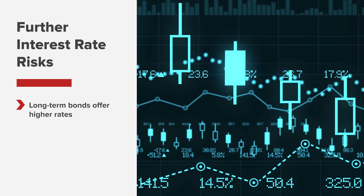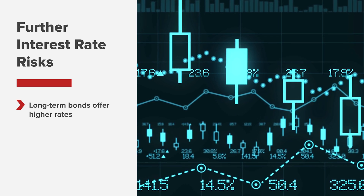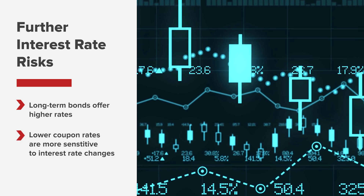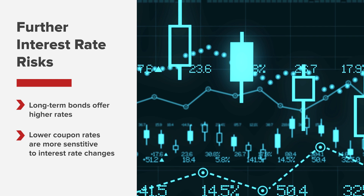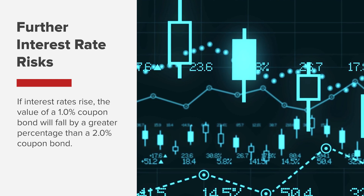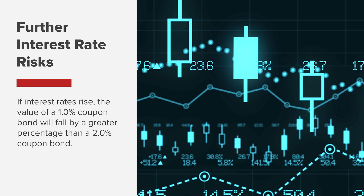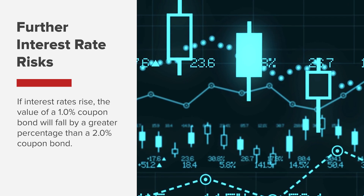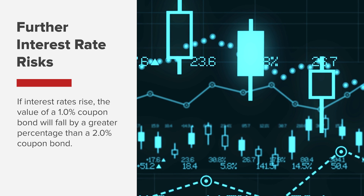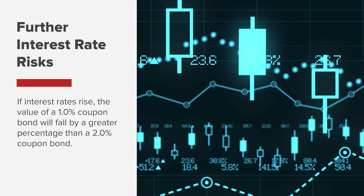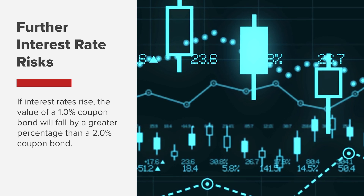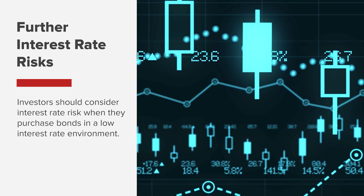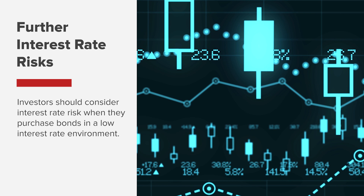If two bonds offer different coupons and all other characteristics are the same, the bond with the lower coupon rate will generally be more sensitive to changes in market interest rates. For example, if interest rates rise, the price of a bond carrying a 1% coupon will fall by a greater percentage than that of a bond with a 2% coupon, even if the two bonds have the same maturity and level of credit risk. This is another reason why investors should consider interest rate risk when they purchase bonds in a low-interest-rate environment.